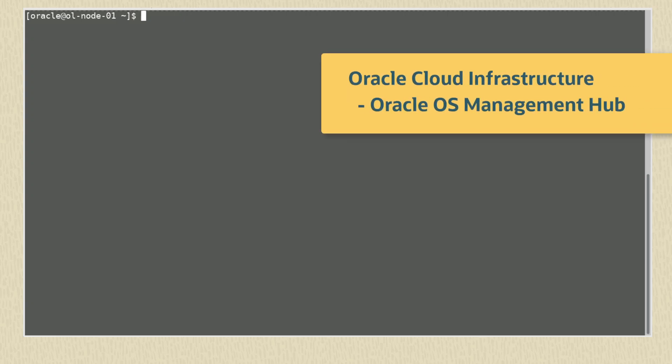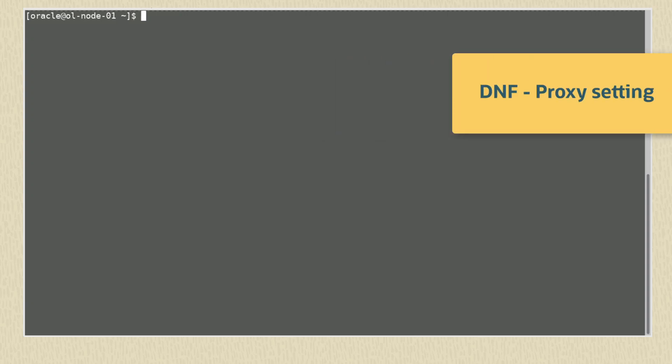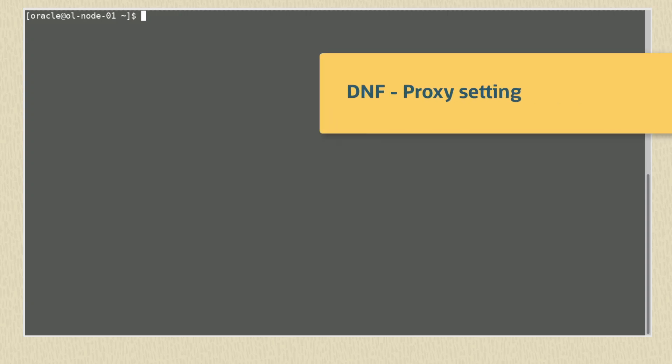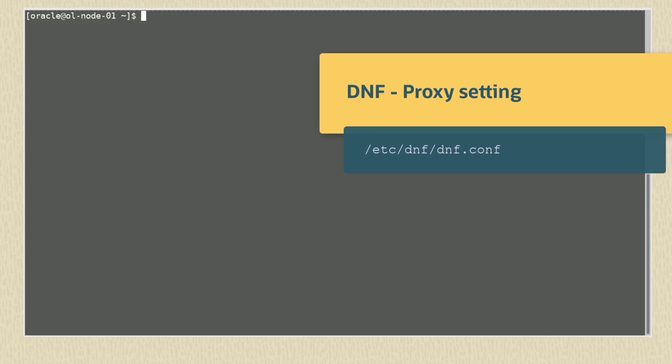If you are upgrading an Oracle Linux instance on Oracle Cloud Infrastructure, verify if Oracle OS Management Hub is running on the instance. You can use Leap with OS Management Hub to upgrade the instance. If using a proxy, make sure DNF is configured with the proxy setting in the file /etc/dnf/dnf.conf.